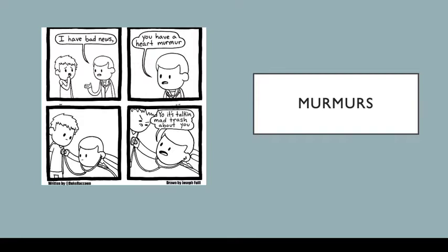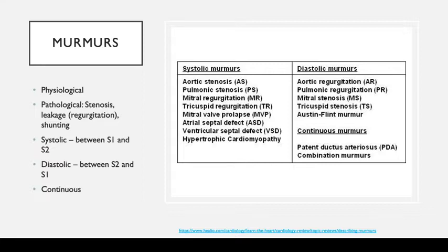The next thing I want to go through is murmurs. There are two categories: physiological murmurs and pathological murmurs. Physiological murmurs are usually systolic murmurs and can happen in conditions which generate high cardiac output, such as in pregnant women, thyrotoxicosis, hyperthyroidism, or fever. Pathological murmurs can be caused by stenosis, leakage (regurgitation), or shunting, such as septal defects. We divide pathological murmurs into systolic, diastolic, and continuous.